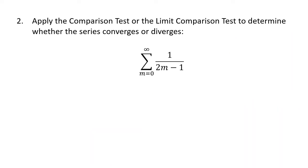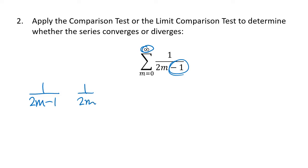For the next example, we have the sum of 1/(2m−1). The idea is that subtracting 1 doesn't really make any difference when m is a gigantic number — imagine m is a trillion, and subtracting 1 from 2m isn't going to do anything. So we compare to 1/(2m). In this case, our fraction has a smaller denominator than 1/(2m), which means it's a larger fraction.